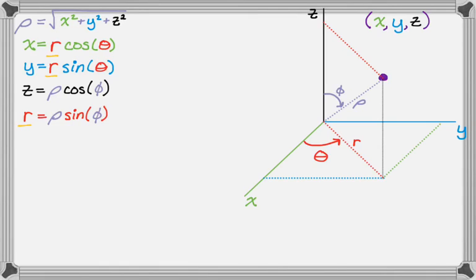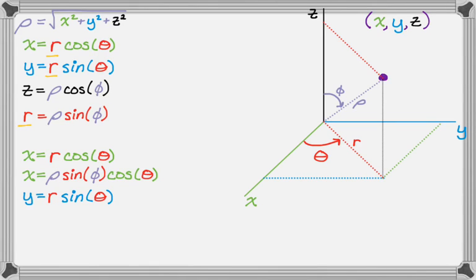So x is actually rho sine phi times cosine theta. And I'm going to do the same thing for y. So y is right now r sine theta. I'm going to make it rho sine phi sine theta.